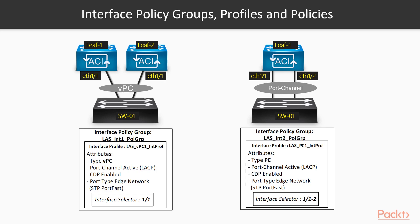When we configure interfaces in ACI, it's completely different from the way we're used to, like going over an interface and typing switchport trunk, allow vlans, or switchport access, and so on. The way that we configure an interface in ACI is by creating three objects.